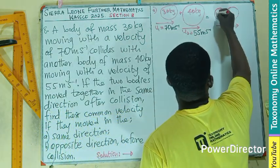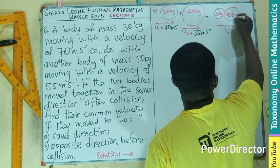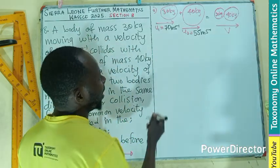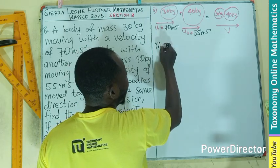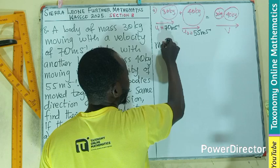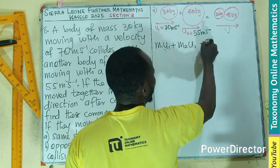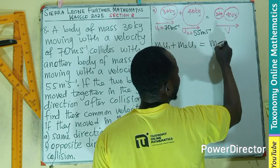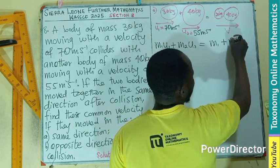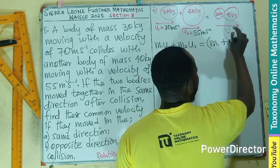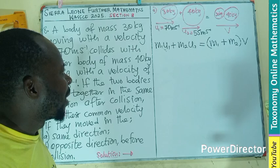So they will be moving together in the same direction with a common velocity. So in this case, we still have our 30 kg and 40 kg with a common velocity. So we can say here that the momentum here, M1U1 plus M2U2 will be equal to M1 plus M2 all multiplied by this common velocity V.